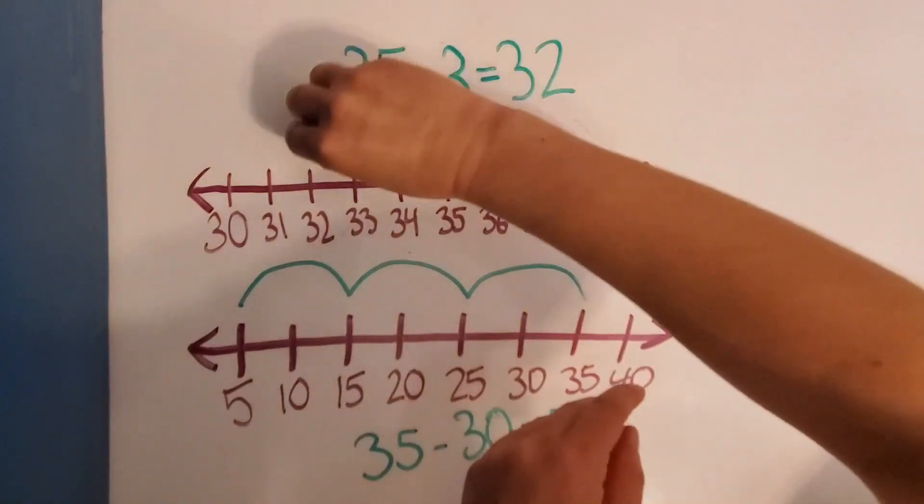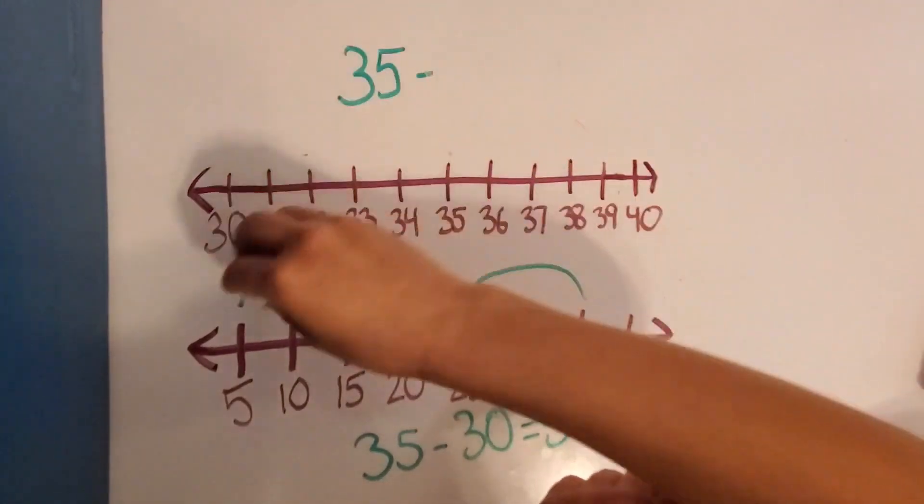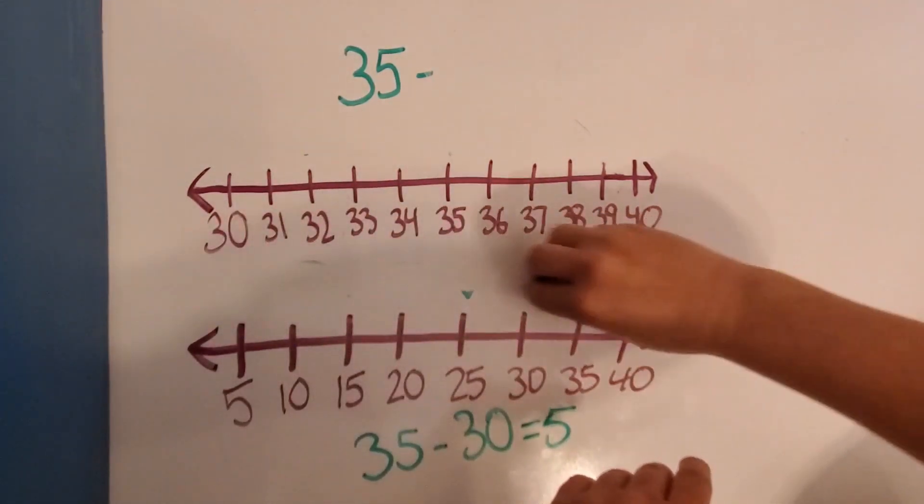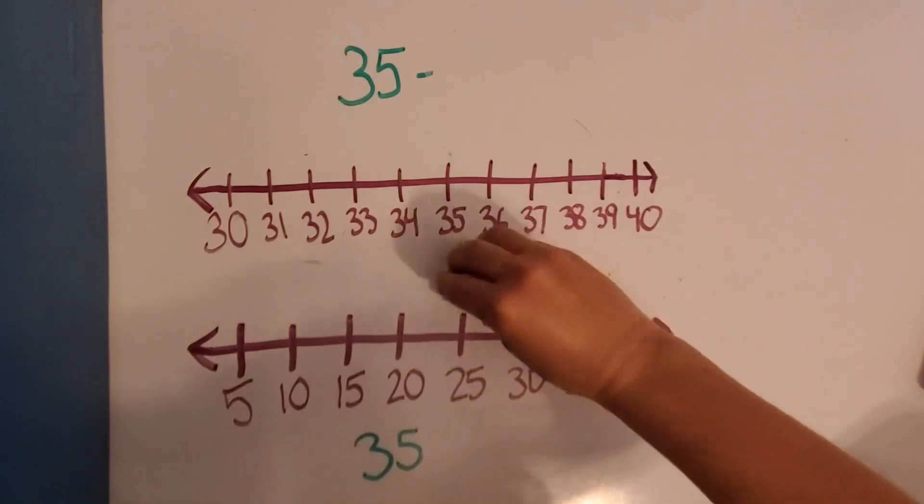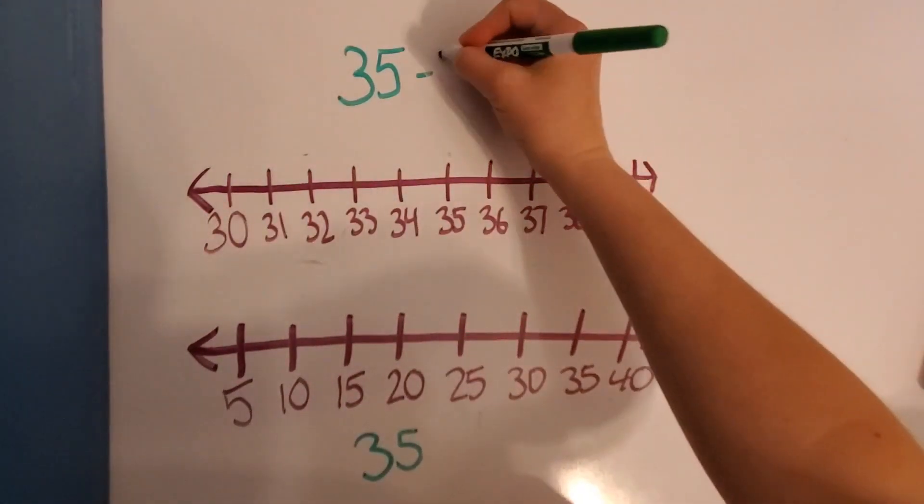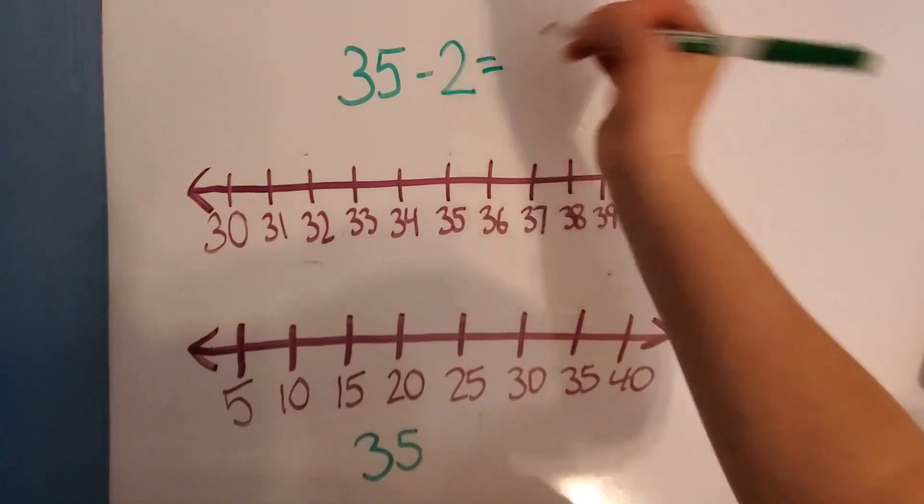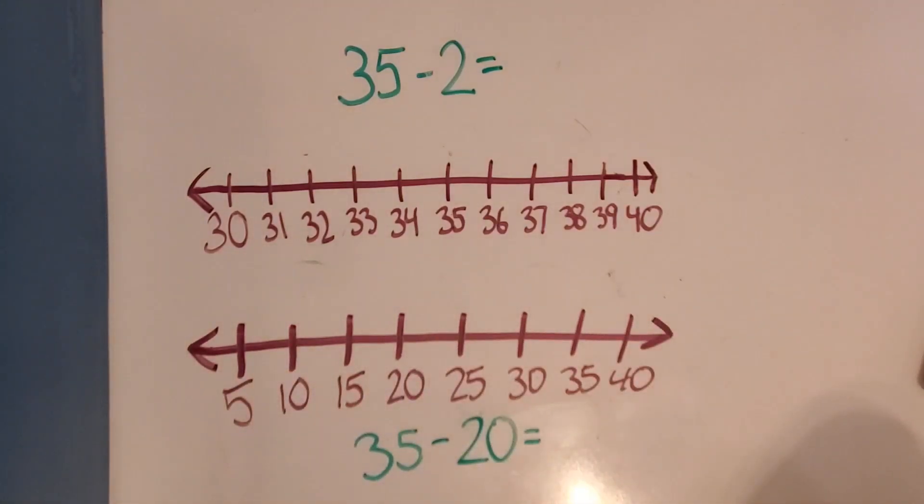We're going to keep the same whole. We're going to keep 35, all right? So we're not going to change the number lines at all. I'm just going to erase what we did before. So we are going to do 35 minus 2, and 35 minus 20.